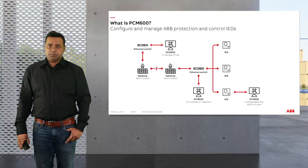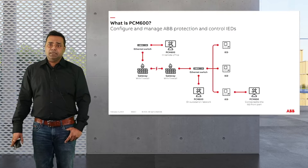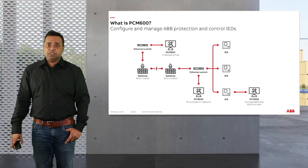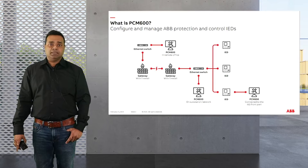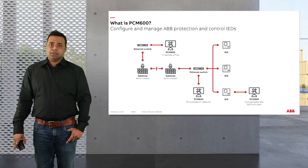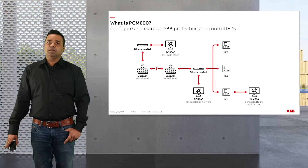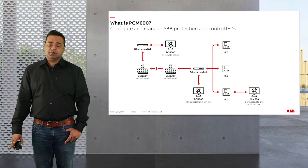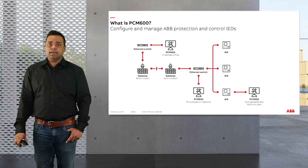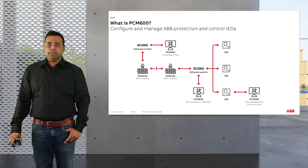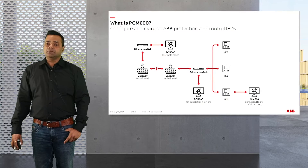Before getting into the details of PCM 600 2.13 and 2.12, let's have a quick recap on PCM 600 itself, especially for our new users. PCM 600 is a free to download and use tool to configure and manage ABB protection and control IEDs. It enables customers to access the whole ABB Relion protection and control IED portfolio with the same configuration tool, covering the entire lifecycle of the IED — from engineering, commissioning, operations, and maintenance.